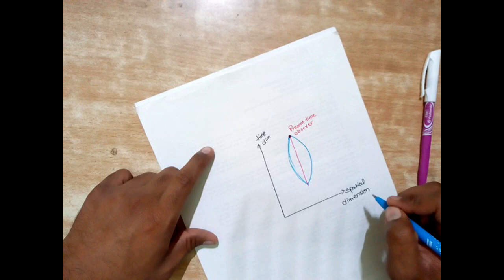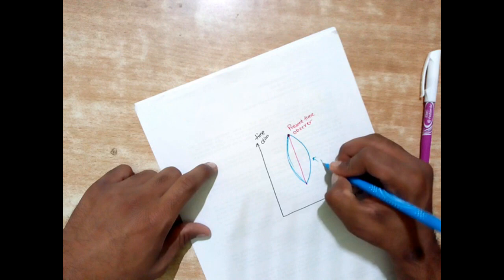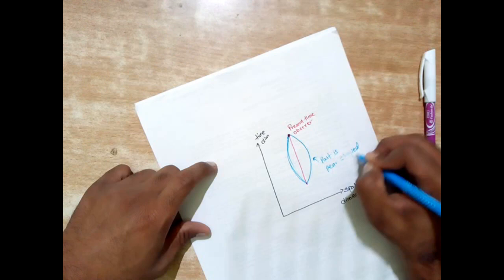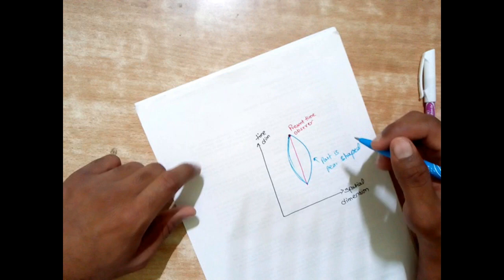Now that's how we try to conclude that the past is pear-shaped because it starts looking like a pear.